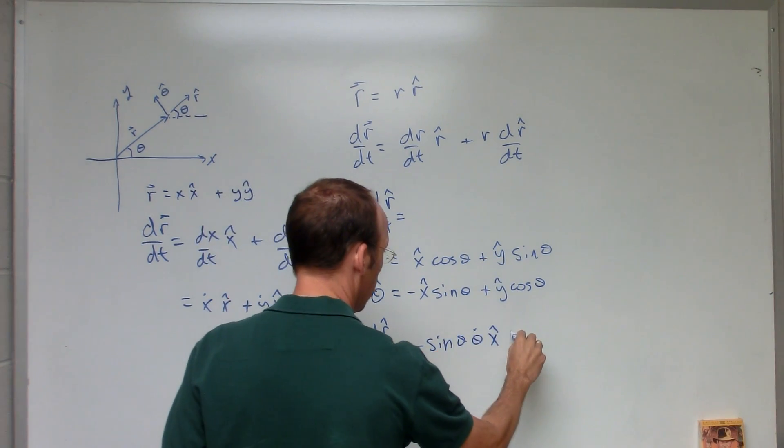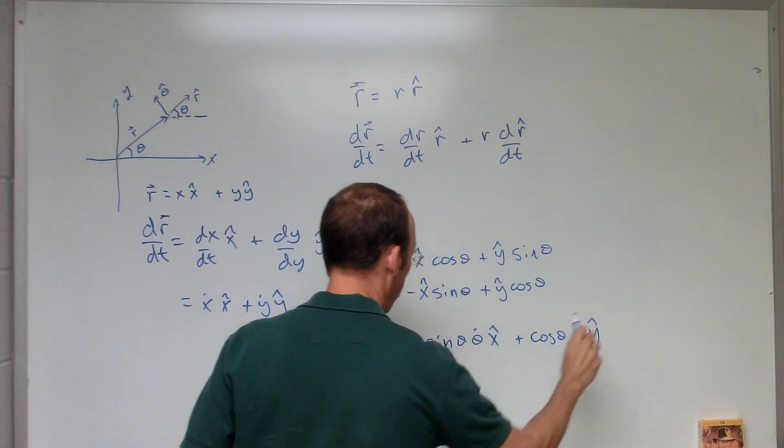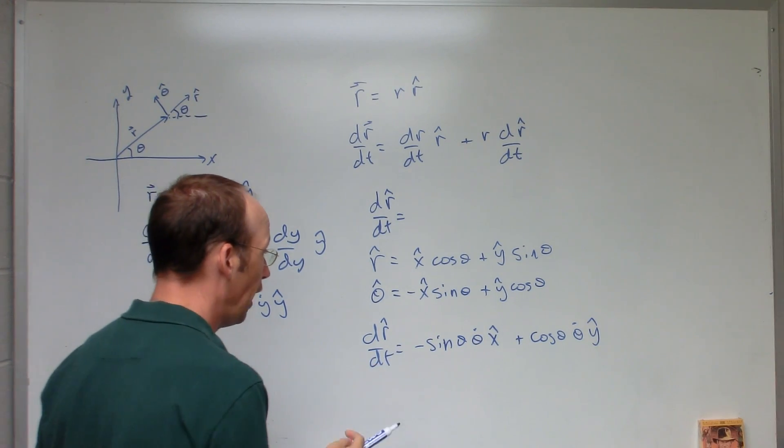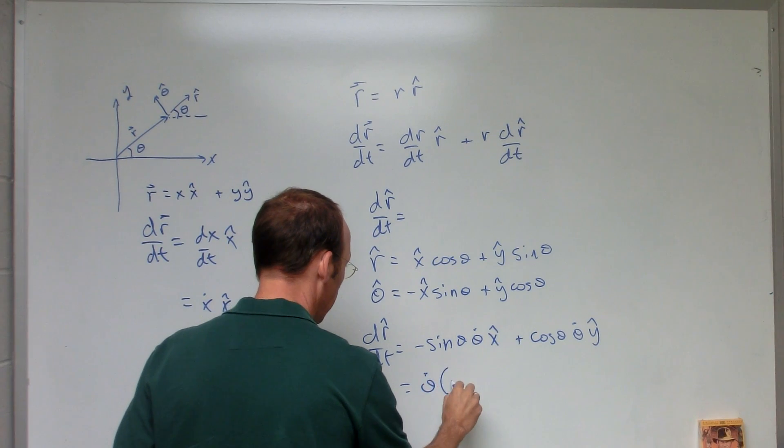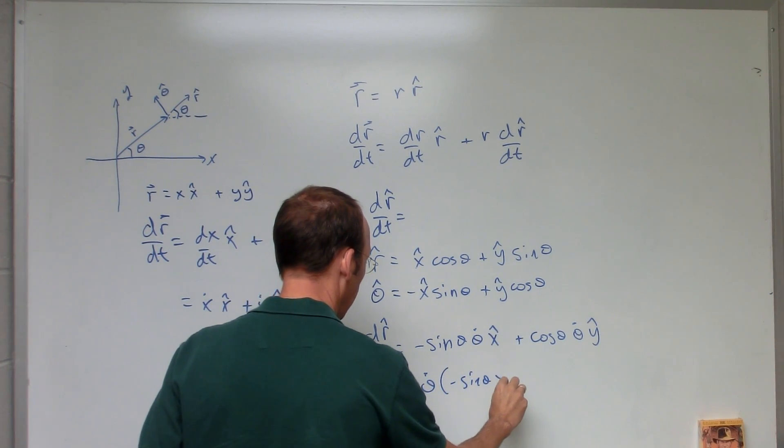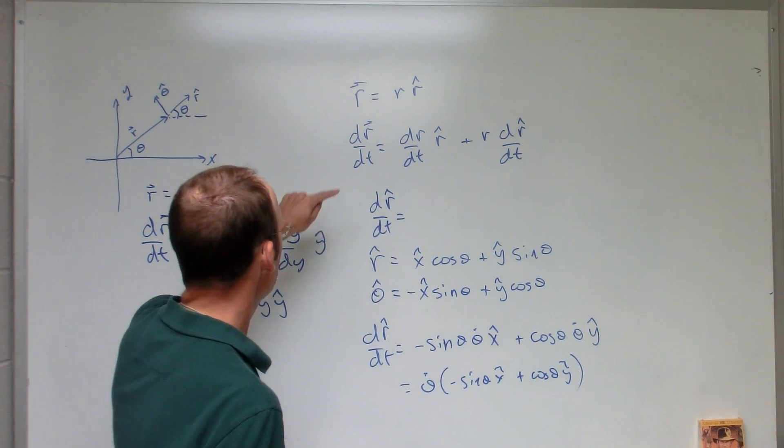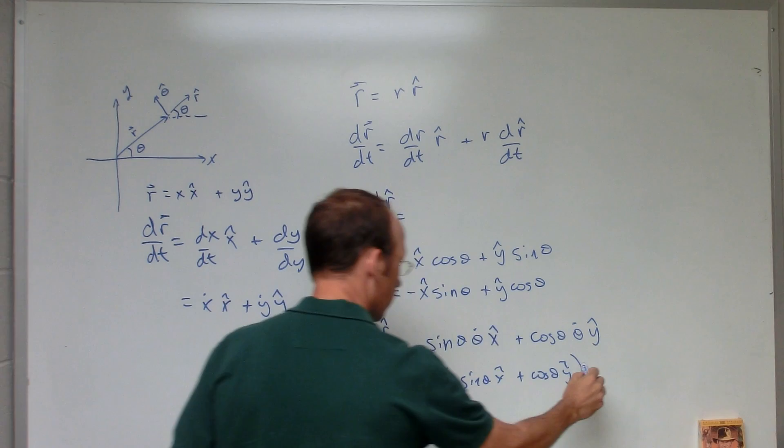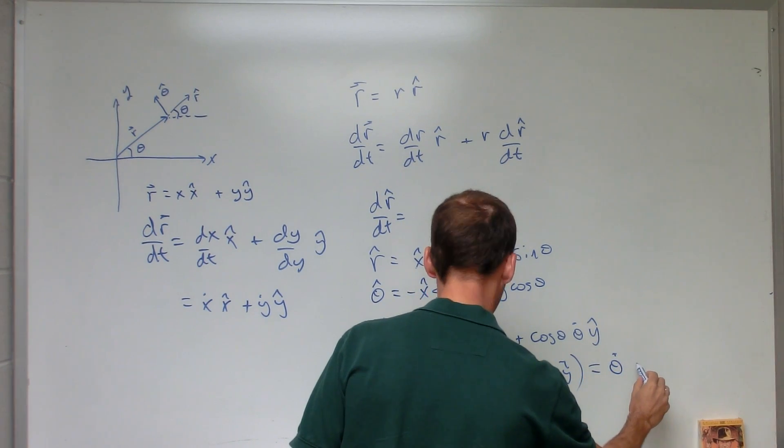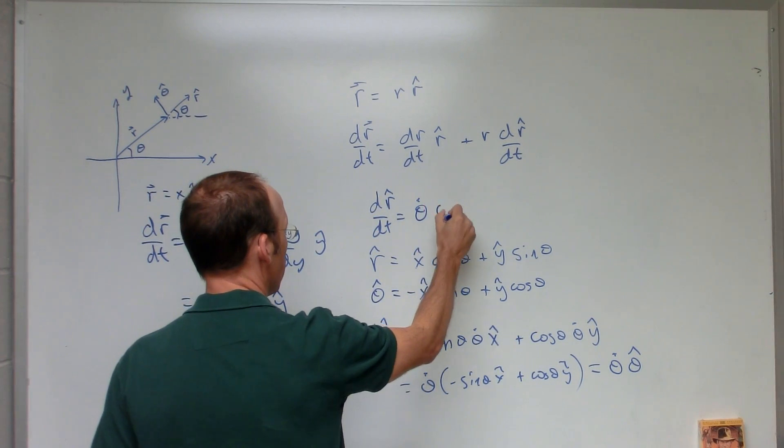And then if I do this one, I get plus cosine theta, theta dot, y hat. So let's factor out this theta dot. And I get dr hat/dt equals theta dot negative sine theta x hat plus cosine theta y hat. And you'll see that is theta dot theta hat. So the derivative of r hat is theta dot theta hat.